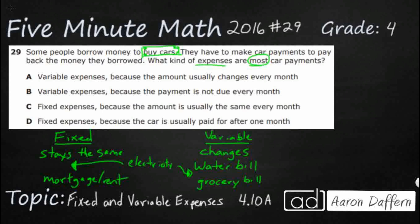So car payments — let's say you get a $20,000 car. Usually what they'll do is charge you monthly. Let's say they do five years, so that's 60 months and 60 payments. They take your $20,000, add a little bit of tax, title, license, and interest, then divide that total amount by 60. You pay it out over those 60 months, and by the end of five years you've paid it off.